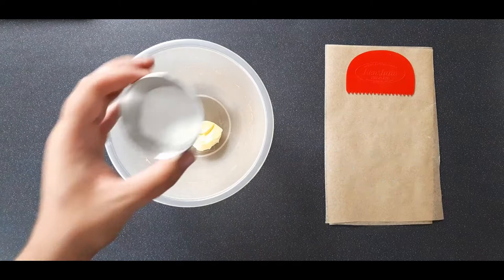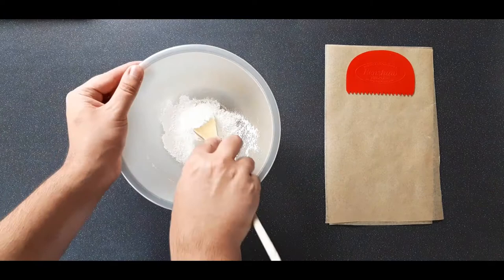We'll start by making a stencil paste. Grab yourself a large bowl and put in 25 grams or an eighth of a cup of butter with 25 grams or a quarter cup of icing sugar, and then beat that together well until smooth.